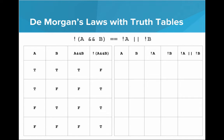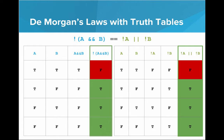Now let's do the exact same thing with the right side — NOT A OR NOT B. The combinations again are true/true, true/false, false/true, false/false. NOT A is false, false, true, true. NOT B is false, true, false, true. OR is true whenever one input is true, only false when both are false. So false OR false = false, false OR true = true, true OR false = true, true OR true = true. Looking at both truth tables, the columns are exactly the same — for every input for A and B, we get the same results. Therefore, NOT (A AND B) is equivalent to NOT A OR NOT B.